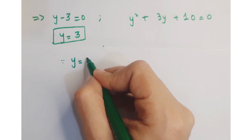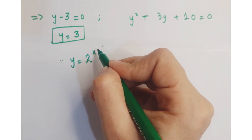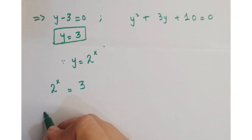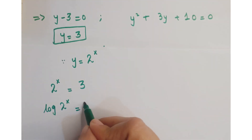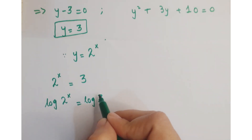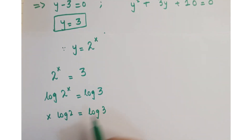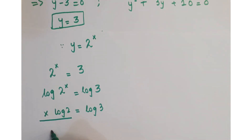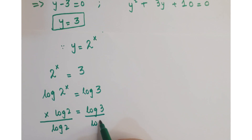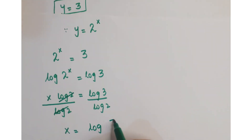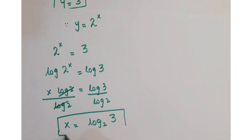Since y equals 2 to the power x, replacing this gives 2 to the power x equals 3. Now in order to evaluate x, just take log on both sides. We get x log 2 equals log 3. Dividing both sides by log 2, this term gets cancelled, so we get x equals log of 3 to the base 2, and this is one value of x.